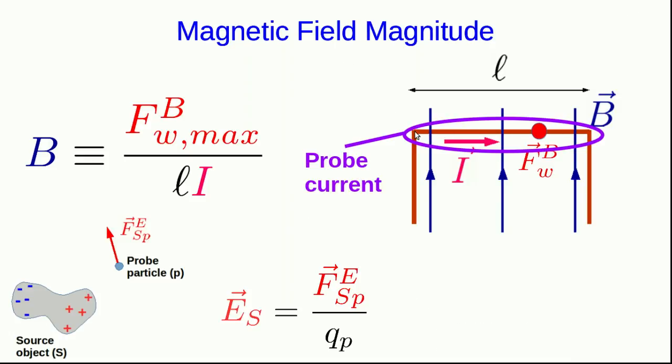And note that we're using a probe current. We would use a probe charge for an E field, but a stationary charge feels no magnetic forces. We need a probe current. And so, as before, we have to divide out everything in the force that's proportional to things that have to do with our probe, so that we get a quantity, the field, which does not depend on the probe we use to measure it.